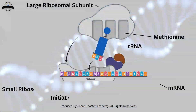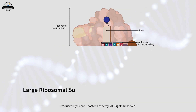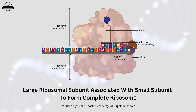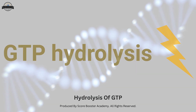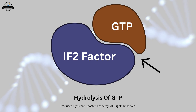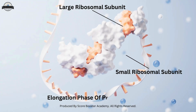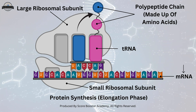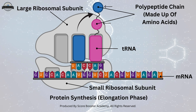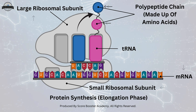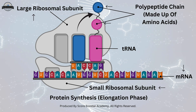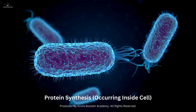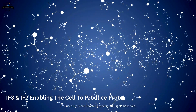Once the initiator tRNA is correctly positioned, the large ribosomal subunit associates with the small subunit to form the complete ribosome, essential for the progression of translation. The energy required for this assembly is provided by the hydrolysis of GTP bound to IF2, a reaction that releases IF2 and allows the ribosome to transition to the elongation phase. During this phase, the ribosome moves along the mRNA, decoding the genetic information and facilitating the addition of amino acids to the growing polypeptide chain. This underscores the importance of initiation factors IF3 and IF2 in ensuring the accuracy and efficiency of protein synthesis in prokaryotes.